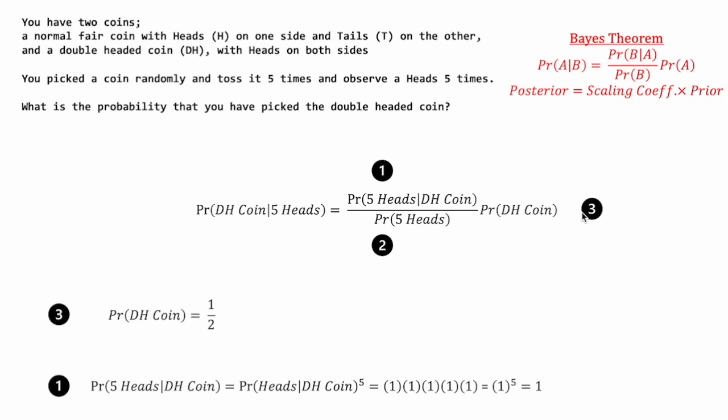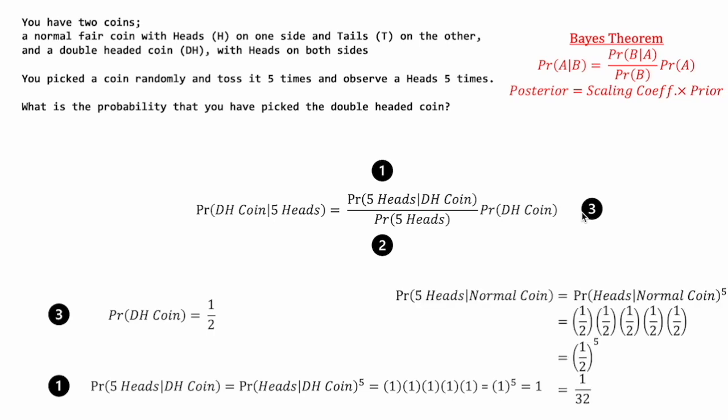For the sake of completeness, let's calculate the probability of getting five heads using the normal coin, because it might come in handy later. The probability of getting five heads using a normal coin, conditioned on the normal coin, is similarly the probability of getting heads on a single flip of the normal coin raised to the power of five. From the previous table, this would be one-half raised to the power of five, giving us one over 32.